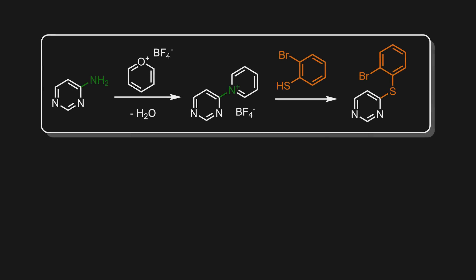As an example, after reacting a heterocyclic amine with peryllium, it forms the corresponding pyridinium salt and eliminates water. This can then be reacted with an oxygen, sulfur, or nitrogen nucleophile and form the corresponding substituted product.